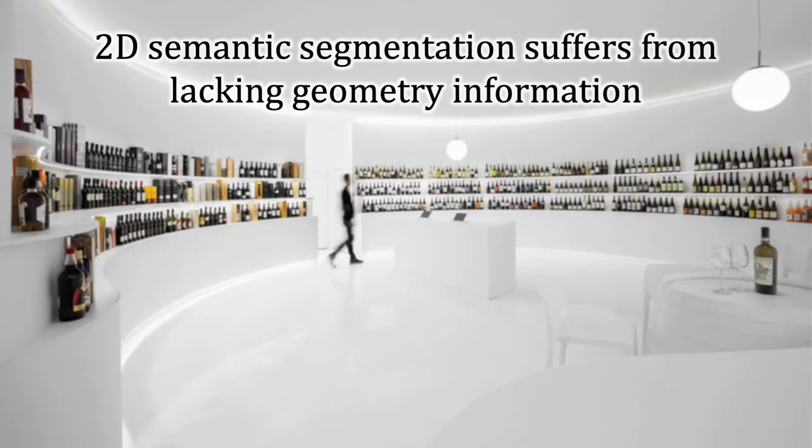2D semantic segmentation suffers from lacking geometry information. For example, given such an image, the textures of chair and background are very similar. It is challenging to recognize the chair without geometry information.